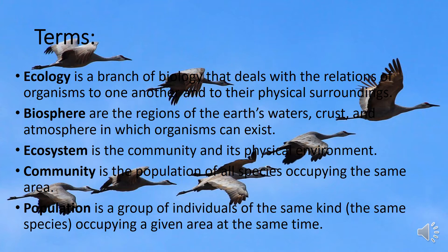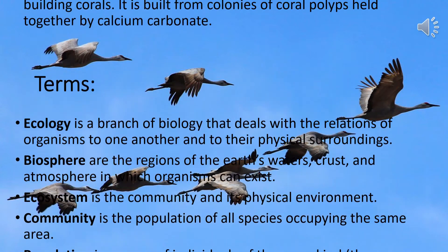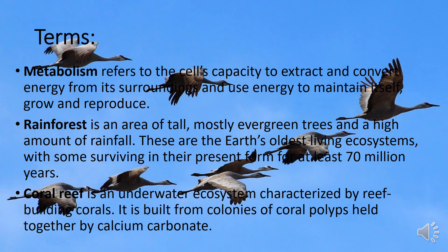Ecosystem is a community and its physical environment. Community is the population of all species occupying the same area. Population is a group of individuals of the same kind or the same species occupying a given area at the same time. Metabolism refers to the cell's capacity to extract and convert energy from its surroundings and use energy to maintain itself, grow, and reproduce.